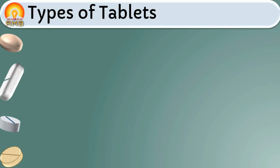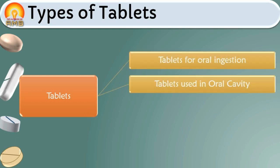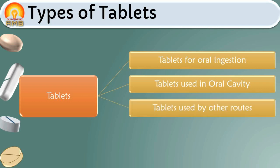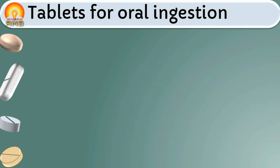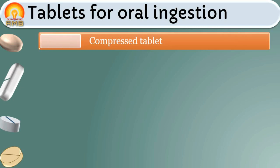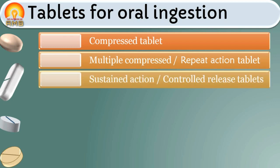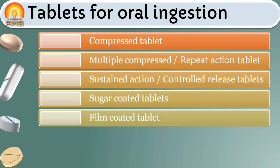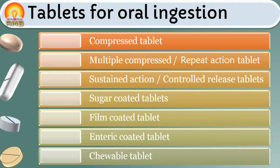Tablets are broadly classified into four types: tablets for oral ingestion, tablets used in oral cavity, tablets used by other routes, and tablets used for preparation of solution. Tablets for oral ingestion are further subtypes as compressed tablet, multiple compressed tablet, repeat action tablet, sustained action tablet or controlled release tablets, sugar coated tablets, film coated tablets, enteric coated tablets, and chewable tablets.